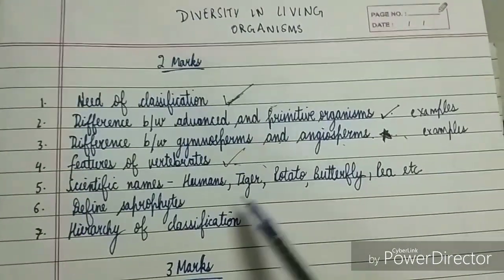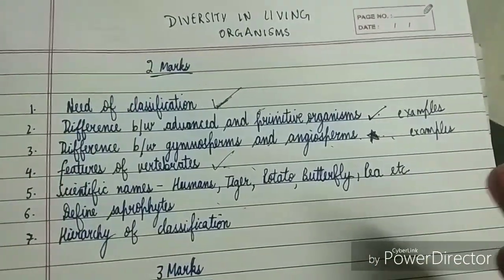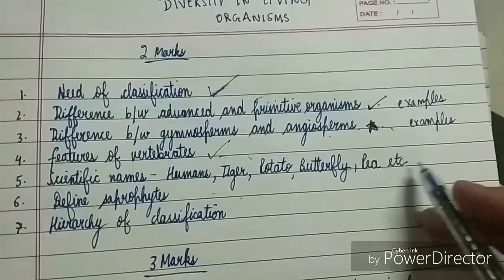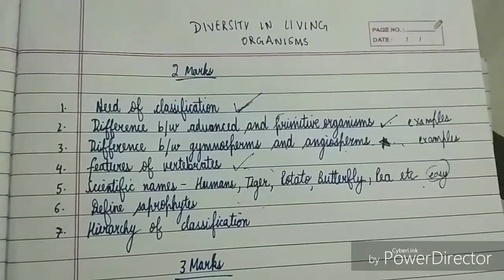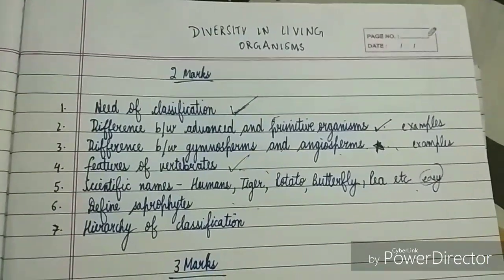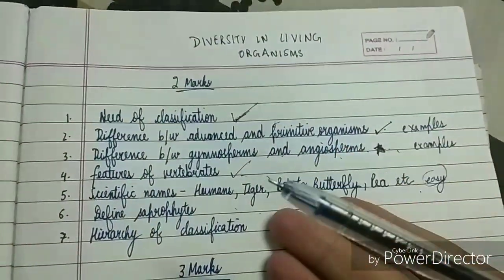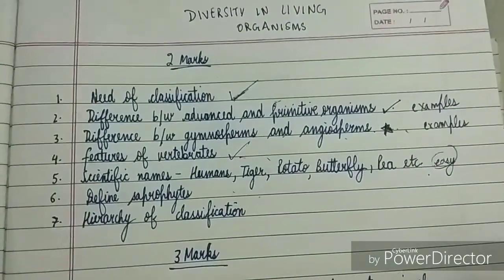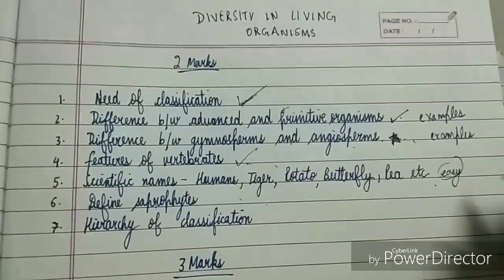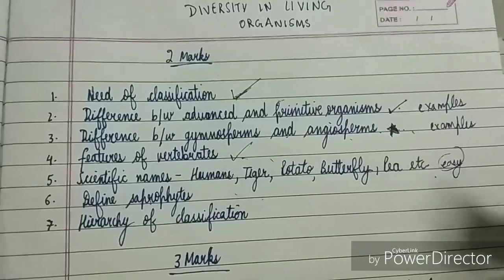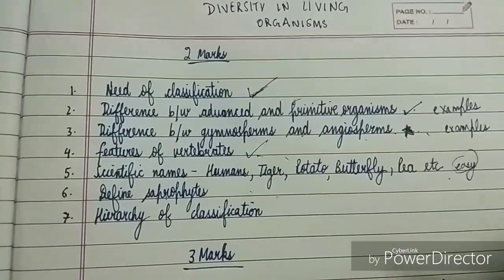Scientific names are another important concept from this chapter. The basic ones are: humans — Homo sapiens, tiger, potato, butterfly, pea, etc. You just have to learn the easy ones; don't cram each and every scientific name. Technical name and scientific name are the same thing, so don't be confused. Difficult ones will definitely not come in the exam.